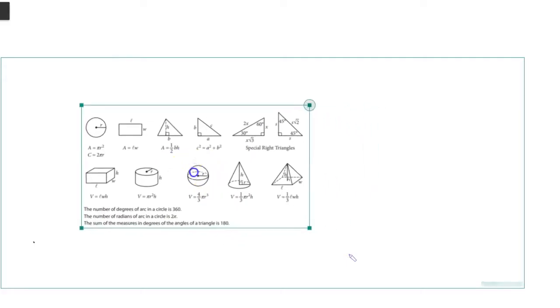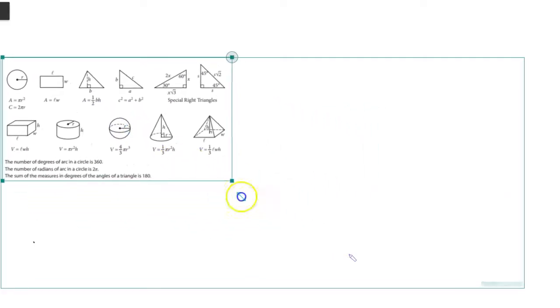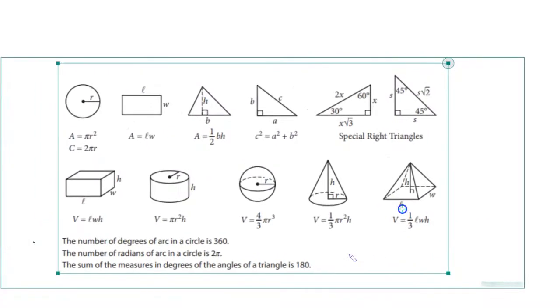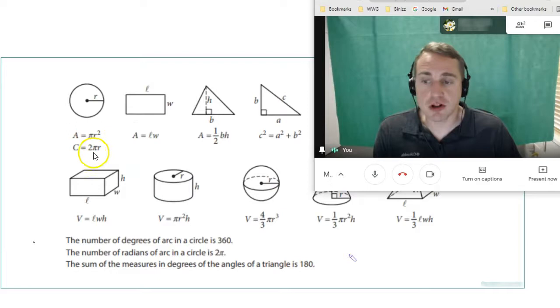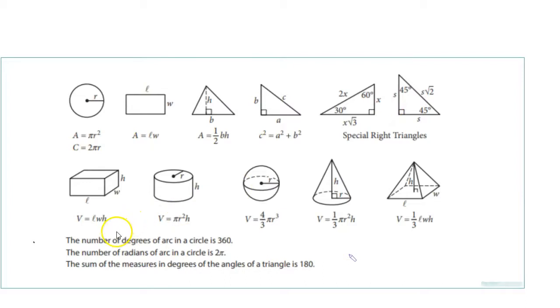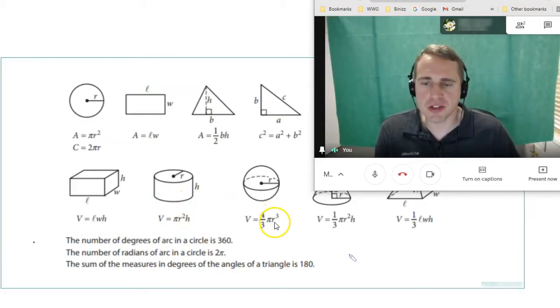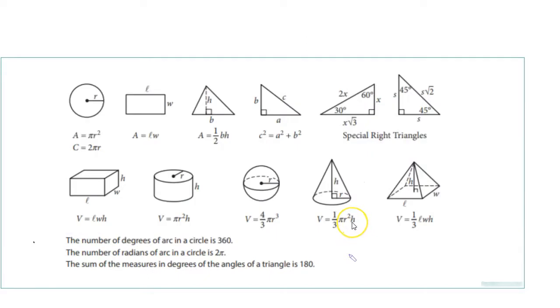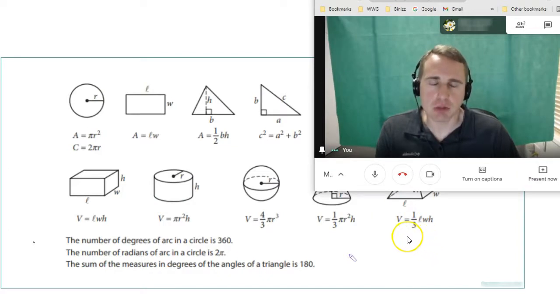We have this reference material on the section that you don't have a calculator. So you have the formulas for area and circumference of a circle, rectangle, triangle, Pythagorean theorem, special right triangles, volume of a rectangular prism, cylinder, sphere, right circular cone, and right rectangular base pyramid. A circle adds to 360 degrees, radians in an arc of a circle is 2π, and a triangle's interior angles add to 180 degrees.